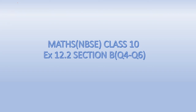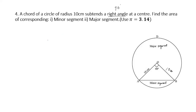Welcome back. We'll start with Exercise 12.2, questions 4 to 6. The first question given to us is: a chord of a circle of radius 10 cm subtends a right angle at the center. We have to find the area of the corresponding minor segment and major segment.